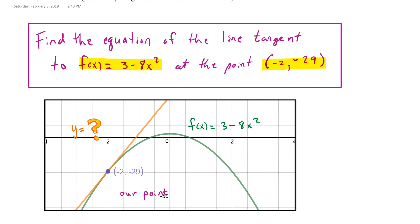So I have a picture here. We have our curve, which is the parabola that's opening down. We have our point, which is negative 2, negative 29. And we want to find the orange line, the equation of the orange line. That is what we don't know.